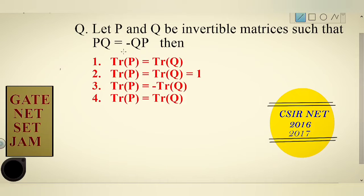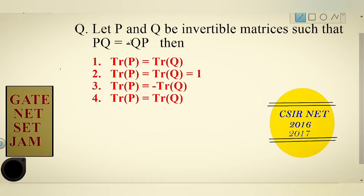In this question, two matrices P and Q are given, and both are invertible matrices such that PQ is equal to minus of QP. You have to find out — given that PQ = -QP — whether the trace of P is equal to the trace of Q.